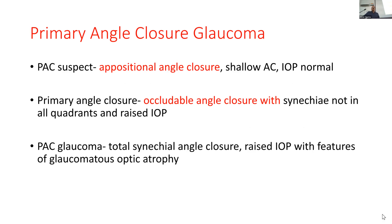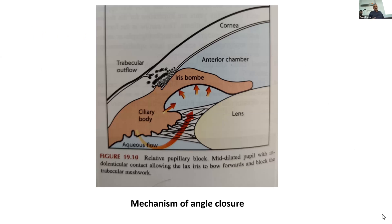In primary angle-closure glaucoma there is shallow anterior chamber and appositional angle closure. Intraocular pressure may be normal, or it can rise when the patient goes to watch a movie in a dark room, then sleeps and wakes up — because of less ambient light there is dilation of the pupil and it occludes the angle. Primary angle closure can be occludable angle closure. With synechiae not in all quadrants but raised intraocular pressure, it is primary angle closure. In primary angle-closure glaucoma there will be total synechial angle closure with raised pressure and glaucomatous optic atrophy.